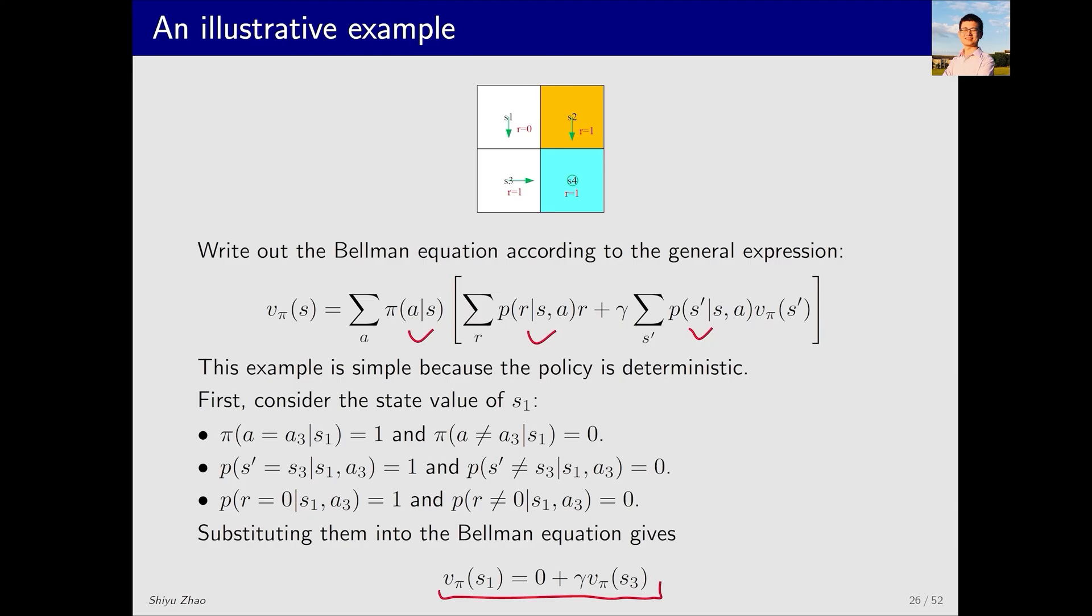Some readers might have noticed that we already encountered a similar equation in the previous motivating example. In fact, we can also directly write out a similar equation without referring to the complex expression. For instance, looking at the diagram, what is the state value v_pi(S1)? Starting from here, I will jump to here, and in this process, I will receive an immediate reward of 0 plus gamma times v_pi(S3), because I will jump to S3. This equation is exactly the same as this one. Although we derive this equation from a more complex expression, it is, intuitively, very easy to understand.